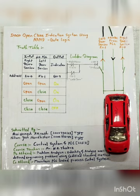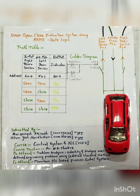Our indicator output is connected to the output pin of PLC Q0.7. The truth table clearly indicates that when the right door sensor is open and the left door sensor is open — meaning both doors are open — Q0.7 is enabled and it ultimately glows the indicator. Similarly, when the right door sensor is open and the left door sensor is closed, Q0.7 is still enabled and the indicator will glow.